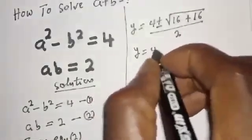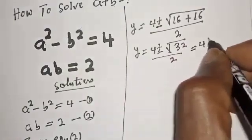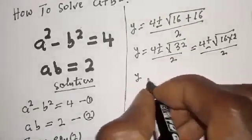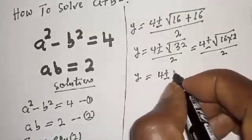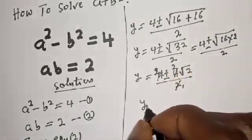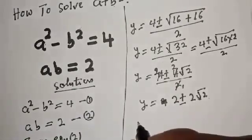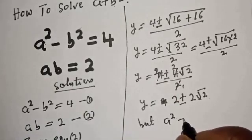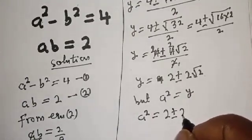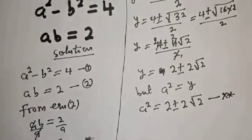So y equals 4 plus or minus square root of 32 over 2, which equals 4 plus or minus square root of 16 times 2 over 2, giving y equals 4 plus or minus 4 root 2 over 2, and simplifying: y equals 2 plus or minus 2 root 2. Since a squared equals y, we have a squared equals 2 plus or minus 2 root 2. Call this equation star star.